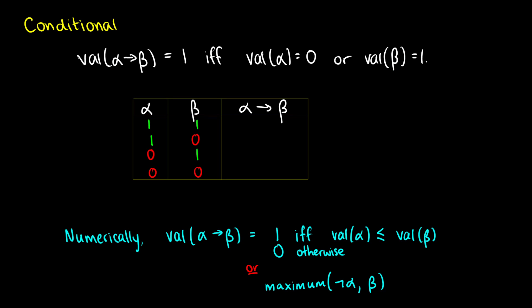The conditional — this is our fourth operator. This is a little bit unintuitive at first. The value of alpha-arrow-beta is 1 if and only if alpha is 0 or beta is 1. So if the antecedent is false, the conditional is true; or if the consequent is true, the conditional is true. In the first row, alpha is true and beta is true — our condition says alpha is false or beta is true, so this is true because beta is true. In the second row, alpha is true so the first condition isn't met, and beta is false so the second condition isn't met — so the second row is false. In the third row, alpha is 0, so the antecedent is false, so the whole row is true. And in the fourth row, the antecedent is false, so it's true.